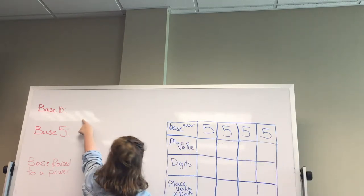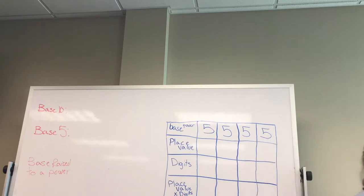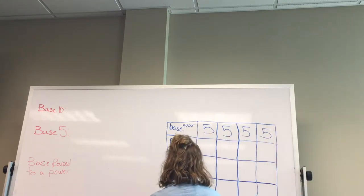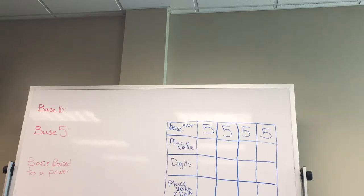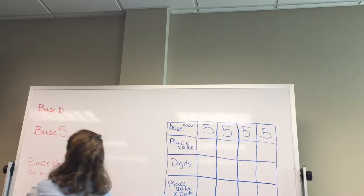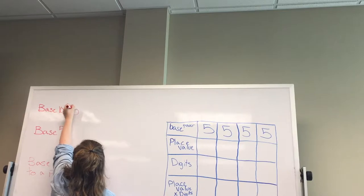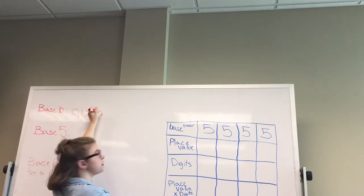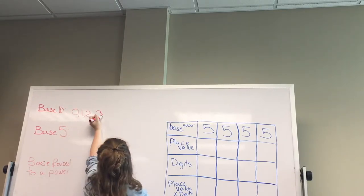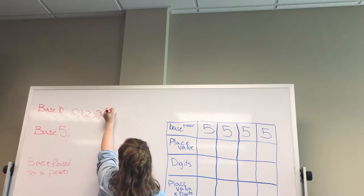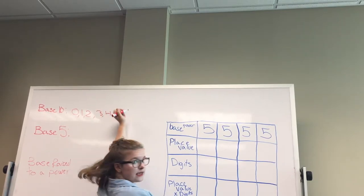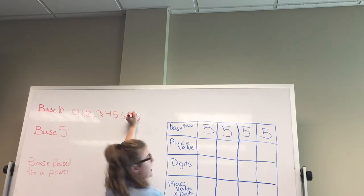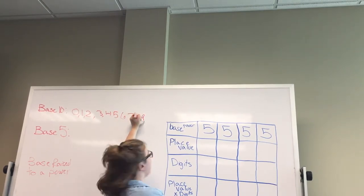Base 10 is the base number we use in everyday life to count things. It has 10 digits from zero to nine: zero, one, two, three, four, five, six, seven, eight, and nine.